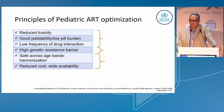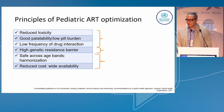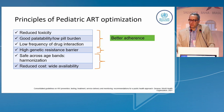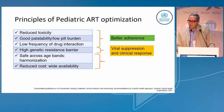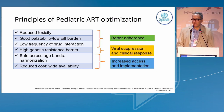Optimizing pediatric treatment means including characteristics such as reduced toxicity, good palatability, low pill burden, low frequency of drug-drug interactions, and a high genetic barrier. The drug should allow for harmonization and be affordable. The first three characteristics will allow for better adherence, the middle two will ensure viral suppression and clinical response, and the last two will ensure effective implementation at the population level.